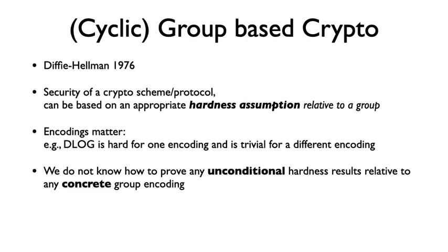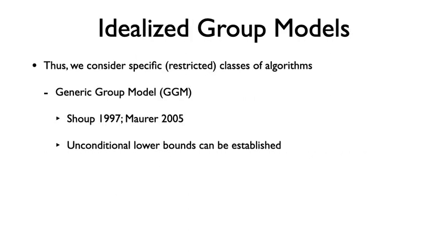Unfortunately, we do not know how to prove any unconditional hardness result relative to any concrete group encoding. Thus, researchers started to consider a restricted class of algorithms. Generic algorithms and the generic group model were introduced. In the generic group model, we can prove unconditional hardness results.